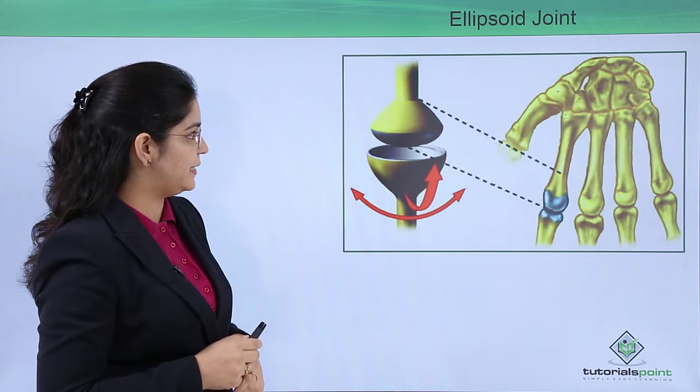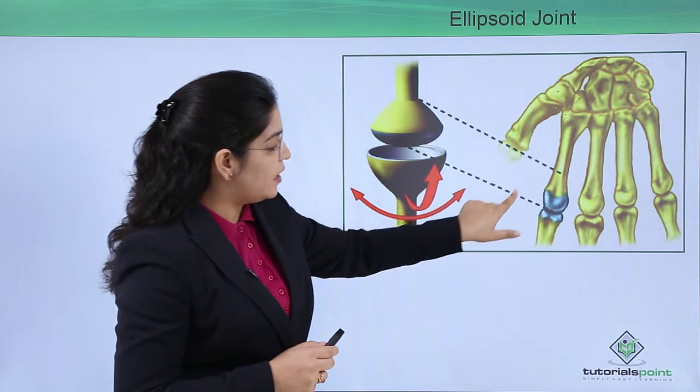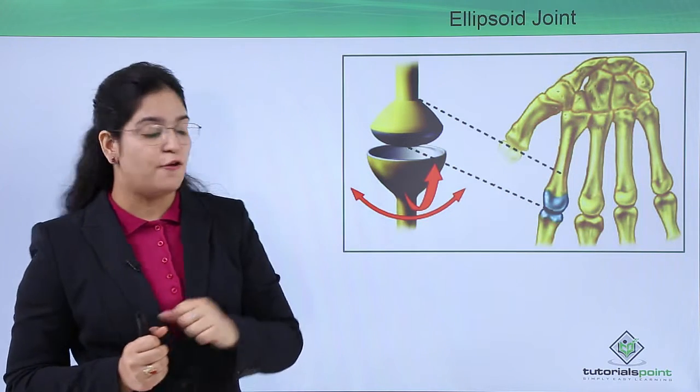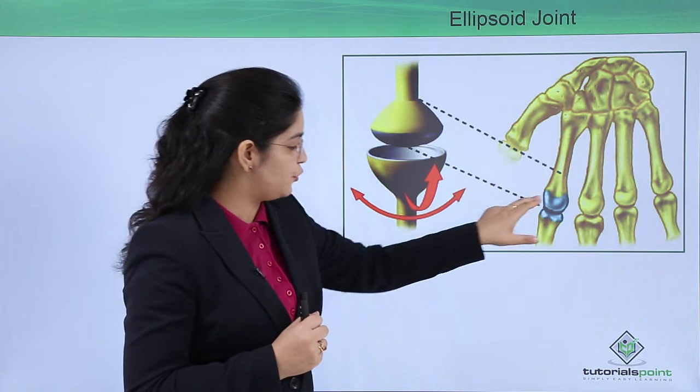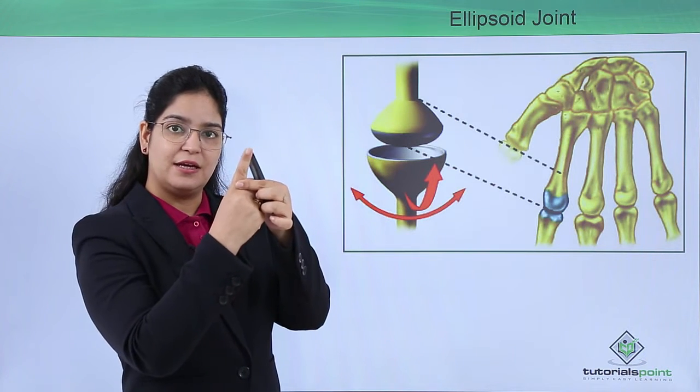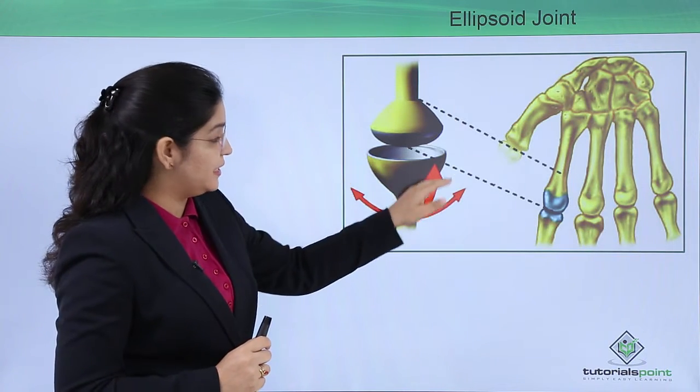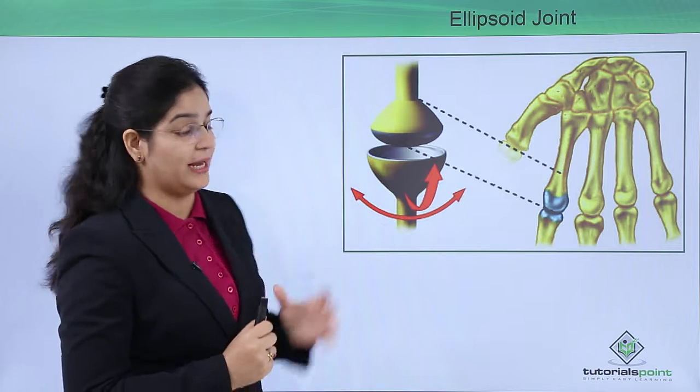our hand. Here you can see this is a joint which is showing a joint between our phalanges or fingers. You can see this movement is all because of this condyle movement or elliptical joint. Here you can see an elliptical-shaped structure and a condyle